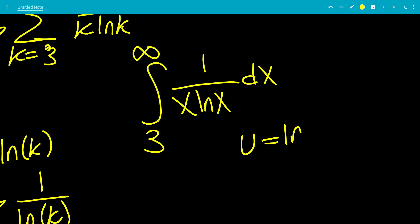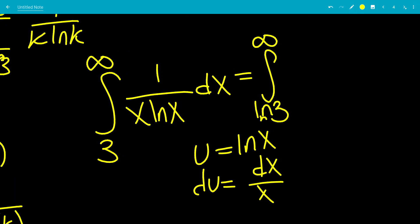So let's let u equal ln x. du equals dx over x. So this will be the integral. Similarly, this will be from ln of 3 to infinity. dx over x we're going to replace with du over ln x, which is u.